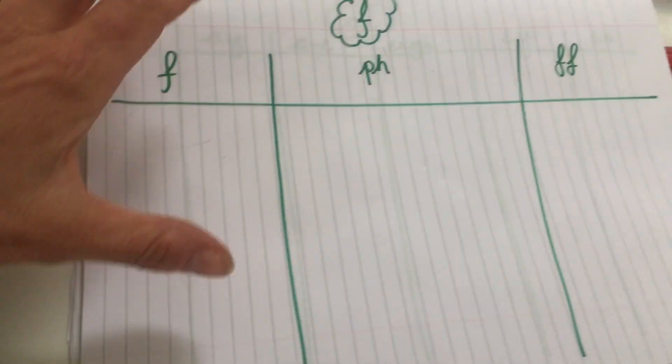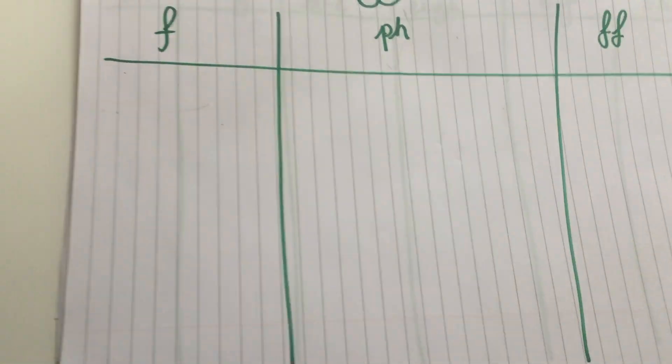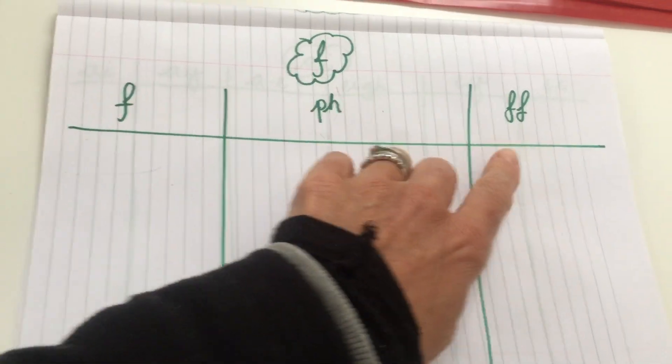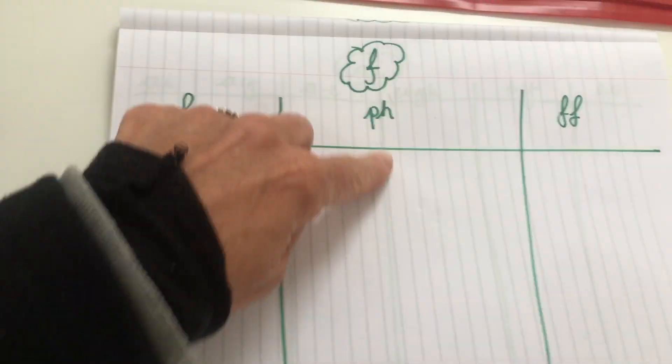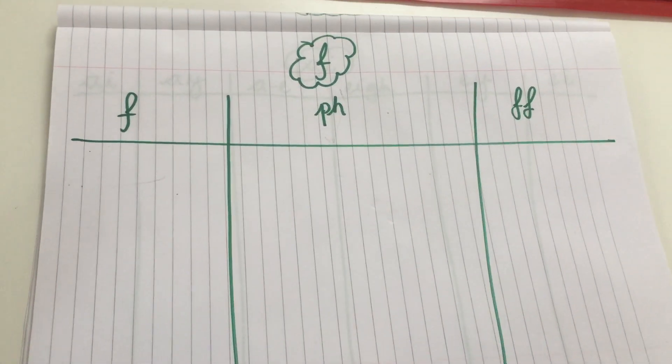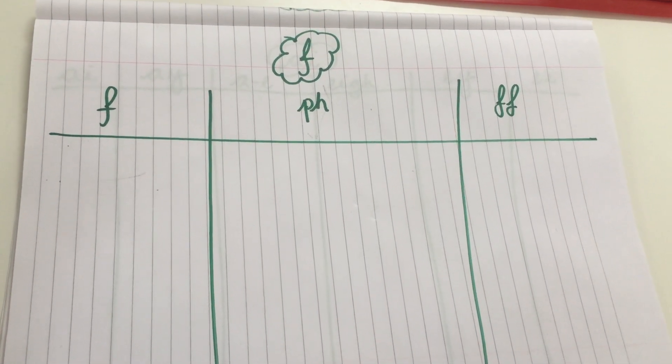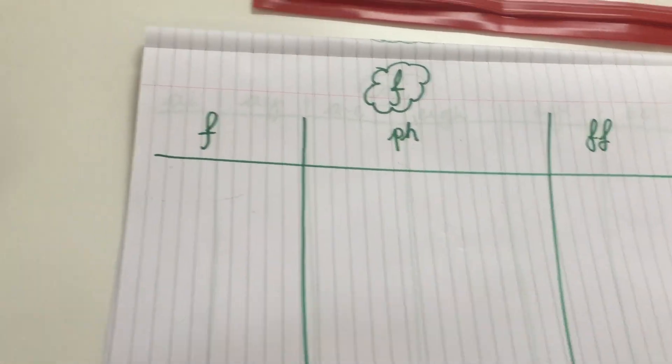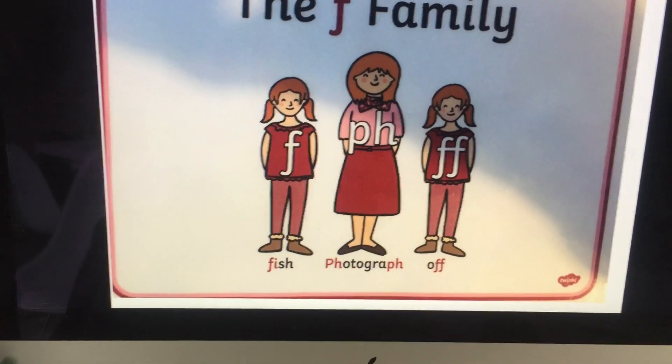So what I'd like you to do is divide your page into three. We've got the F and the PH and the FF, and we're going to write a list of some of the words that each of these sounds makes. So the sound and the alternative spellings. Let's have a look at what pictures we've got today.